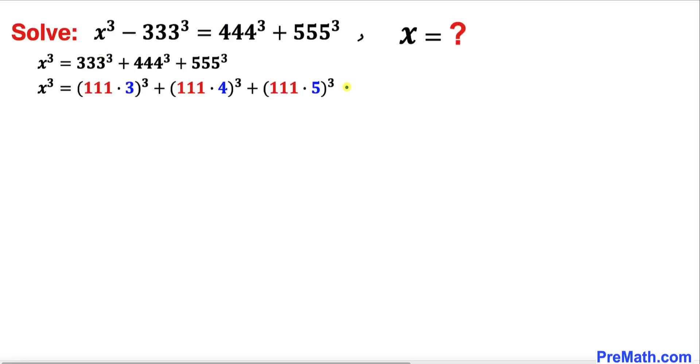Let's recall this basic rule of exponents. Therefore our equation could be written using this exponent rule, and now we can see that 111³ is in common among these three terms. So we can factor out this number, and inside the parentheses we get 3³ + 4³ + 5³.